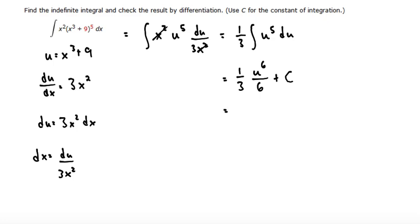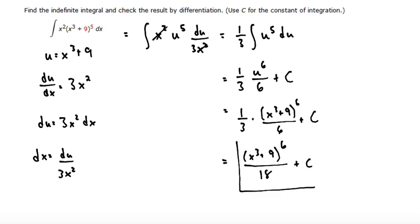But then again, I need to re-substitute my x cubed plus 9 into my u. So that makes 1 third times x cubed plus 9 to the power of 6 over 6 plus c. And then if I multiply my fractions, I multiply straight across, and I get the numerator is just 1 times, so it doesn't change the numerator. x cubed plus 9 to the power of 6, and then multiply my denominators, 3 times 6 is 18, plus c. And that is the final answer.